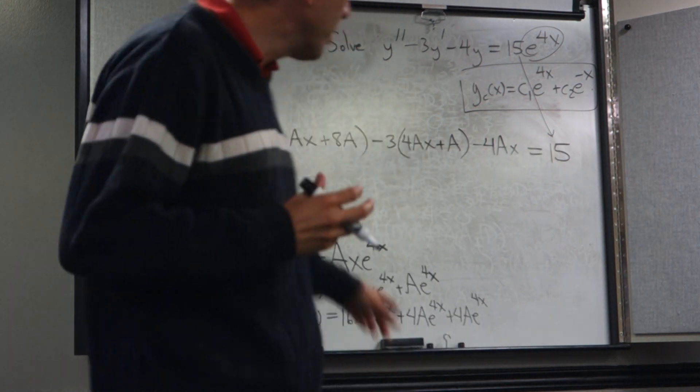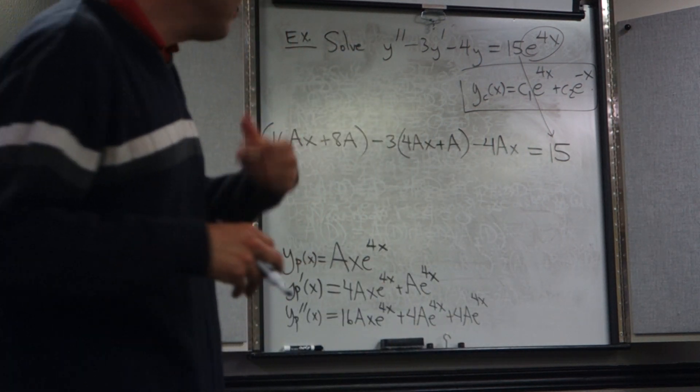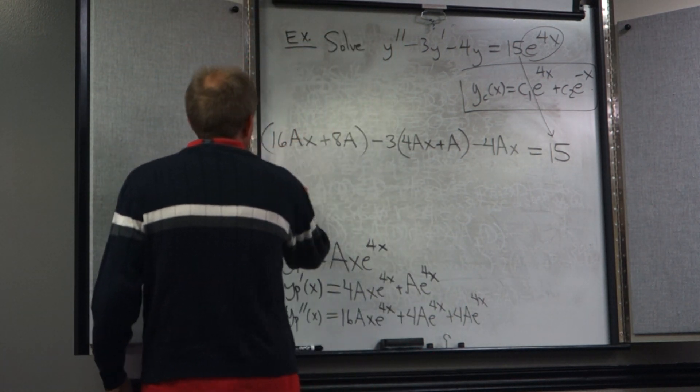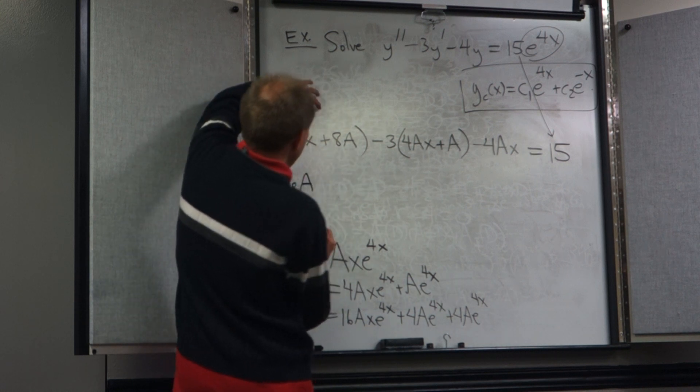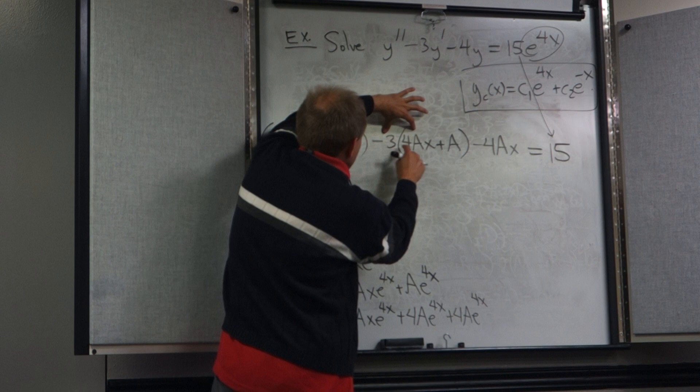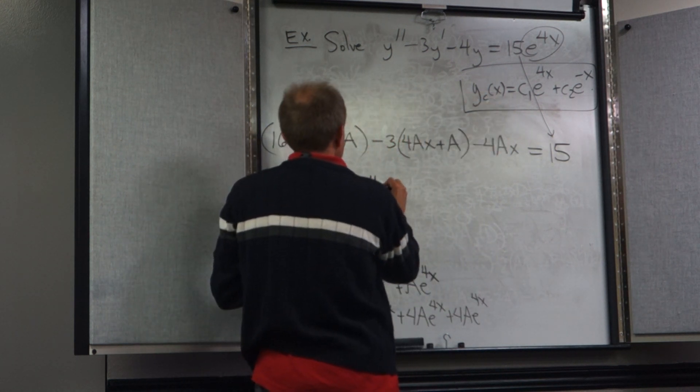Now some of the terms on the left side have an x with them, and some of them are just constants. So for example, I see that there's an x on this first term and on this term here, which is 12ax, and then minus 4ax.